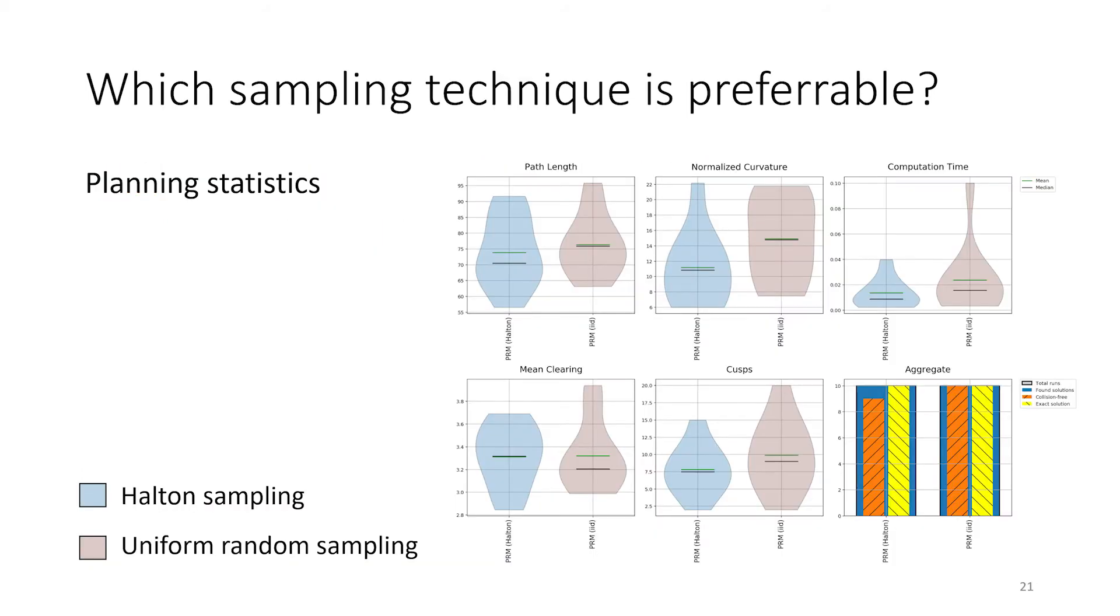The experiments show the advantages of using deterministic over random sampling. PRM with Halton samples achieves better performance in terms of path length, normalized curvature, planning time and the number of cusps.